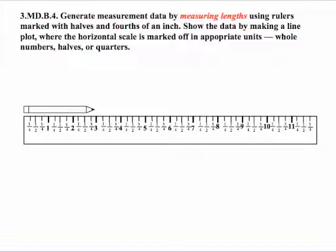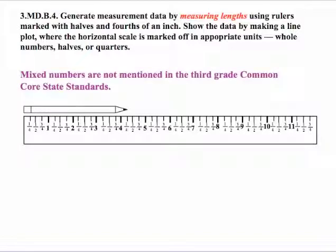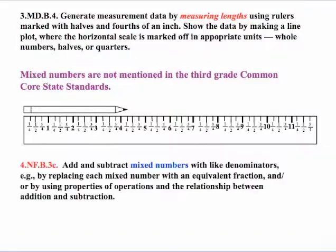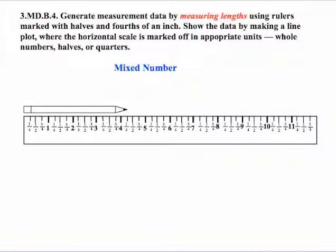But what if we have something like this? That looks like it's about four and one-fourth. That's about four and a quarter inches long. What we have to address is the fact that mixed numbers are not mentioned in the third grade Common Core State Standards. In fact, mixed numbers don't appear in the standards until fourth grade. In standard 4.NF.B.3.C, that talks about adding and subtracting mixed numbers with like denominators. Depending on where your students are, you might have to go back and explain and teach them what a mixed number is.